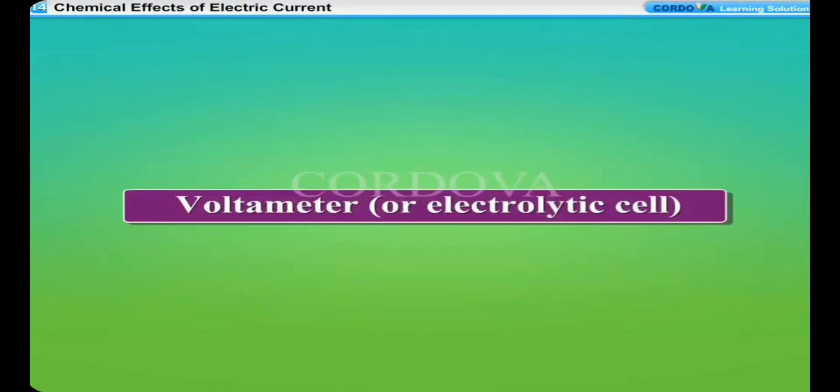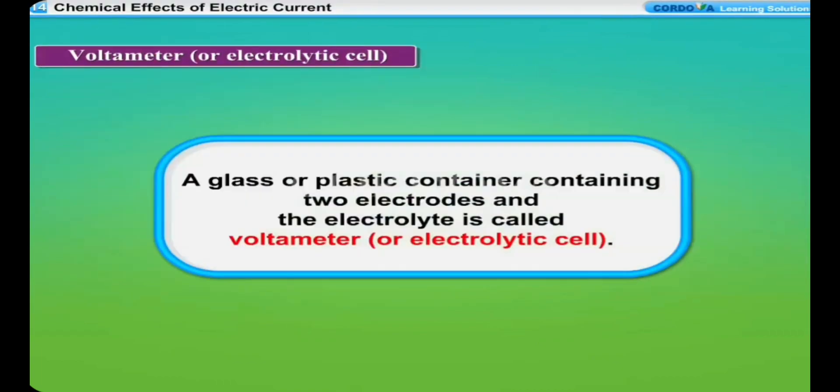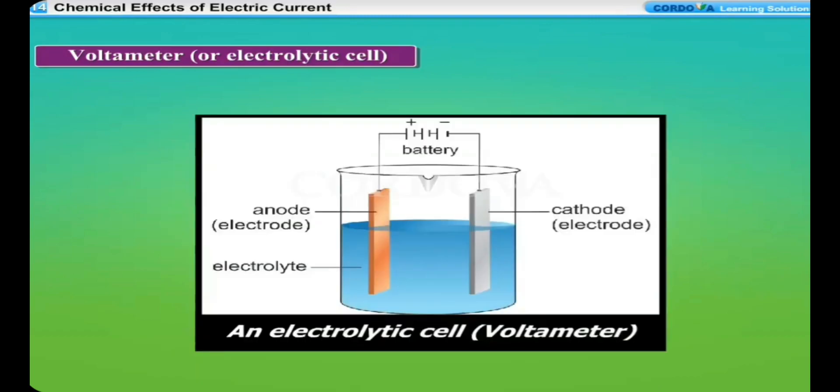Voltometer or electrolytic cell: A glass or plastic container containing two electrodes and the electrolyte is called voltometer or electrolytic cell. In a voltometer, the process of electrolysis is carried out.